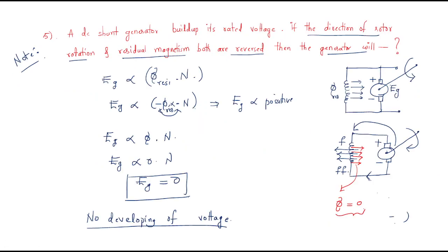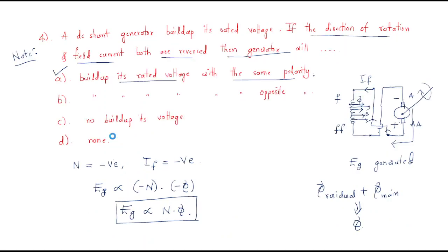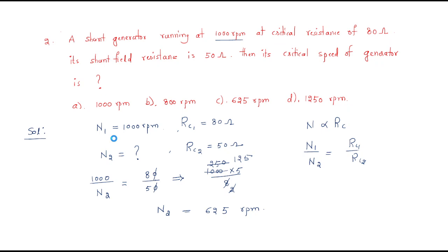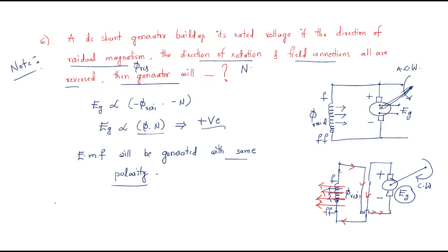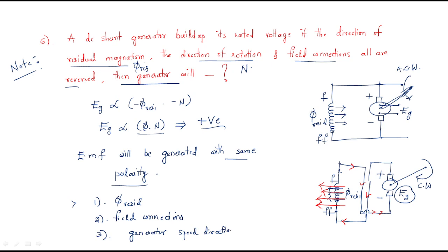These are very important problems because there is a chance of confusion when such questions are asked. Whenever dealing with these problems, we have to look at three things: first, the residual magnetism; second, the field connections; third, the generator speed direction. These are all very important for understanding the problem. I hope all of you understood the session — thank you.